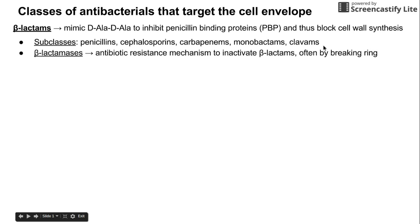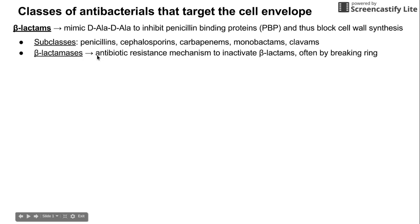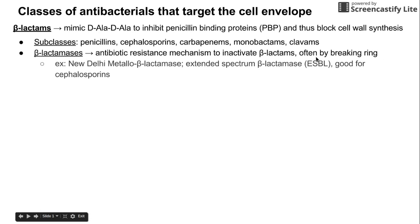Beta-lactams are countered by bacteria using beta-lactamases — note the '-ase' ending, meaning these molecules cleave beta-lactams. It's a method of antibiotic resistance that allows bacteria to inactivate beta-lactams, usually by breaking the ring structure present in them. Two beta-lactamases worth knowing are the New Delhi metallo-beta-lactamase and the extended spectrum beta-lactamase (ESBL), the latter being particularly effective against cephalosporins.